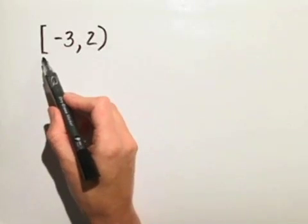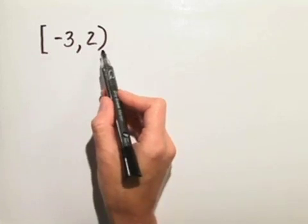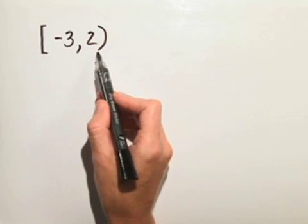Notice the bracket on the side by negative 3 means that the number negative 3 is included in our interval. However, the parentheses by the 2 indicates that 2 is not included in our interval.